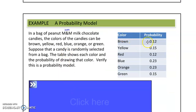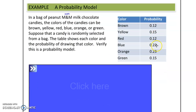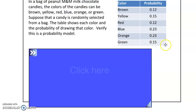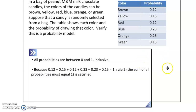In this probability model, we're given fractions representing probabilities for a bag of peanut M&M candies — they could be any of these colors. We're supposed to verify that it's a probability model. It qualifies for two reasons: first, all the probabilities are between zero and one inclusive — no negatives, no values larger than one. Second, if you take the sum of all these probabilities, you get one.